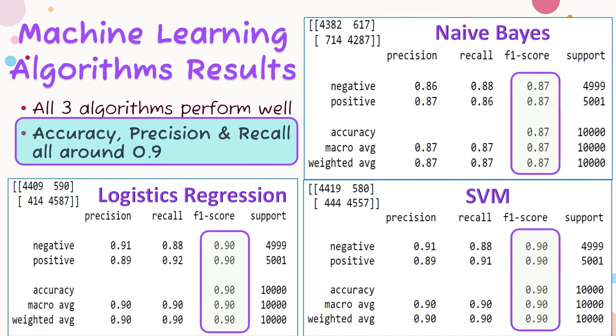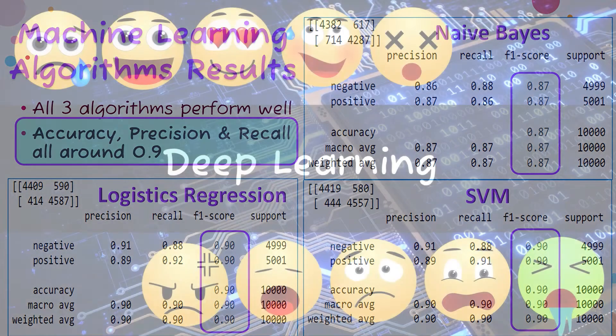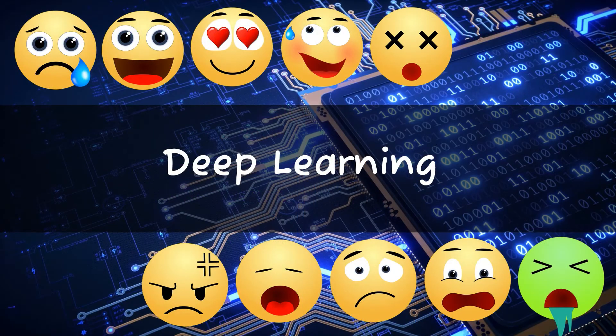Looking at the results of all three machine learning algorithms together, all three are quick to train and produce accurate results at around 90%. Now let's look at deep learning.